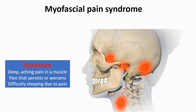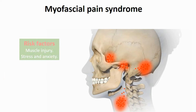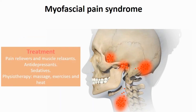Symptoms include deep aching pain in a muscle, pain that persists or worsens, and difficulty sleeping due to pain. Risk factors include muscle injury, stress, and anxiety. Treatment includes pain relievers, muscle relaxants, antidepressants, sedatives, physiotherapy, massage, exercises, and heat.